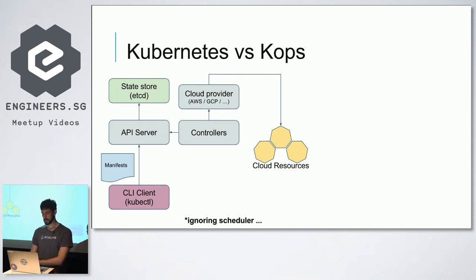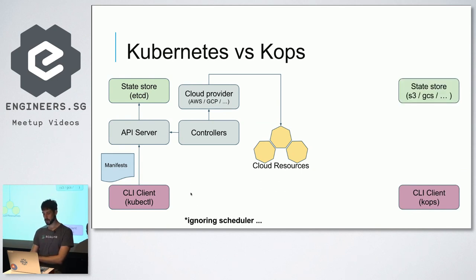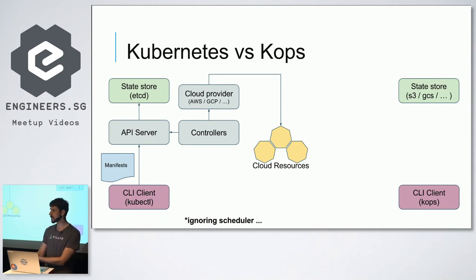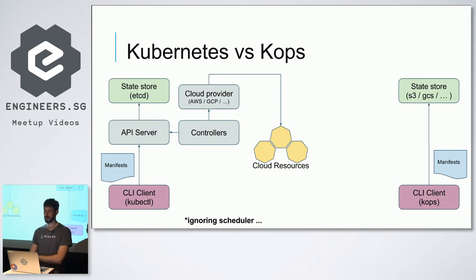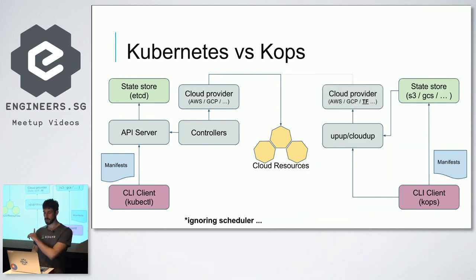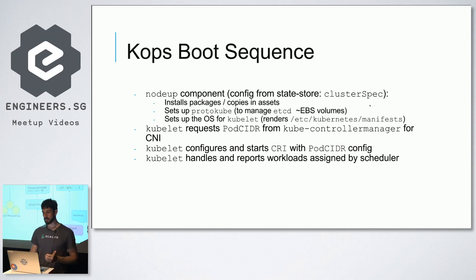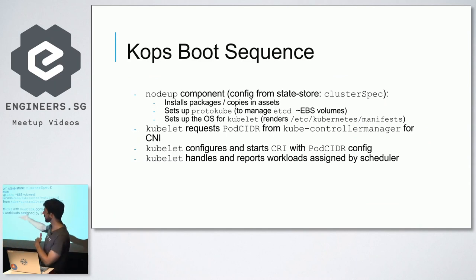KOPS is designed similarly. We have a client app on our laptop and a state store — except it's S3 or Google Cloud Storage instead of etcd. We store manifests directly into the bucket, with no API server. There's a CloudUp component that talks to the cloud provider or to Terraform. I can use KOPS to generate Terraform and then create my resources. Once cloud resources are created, the nodes that start have a certain boot sequence as designed by KOPS.